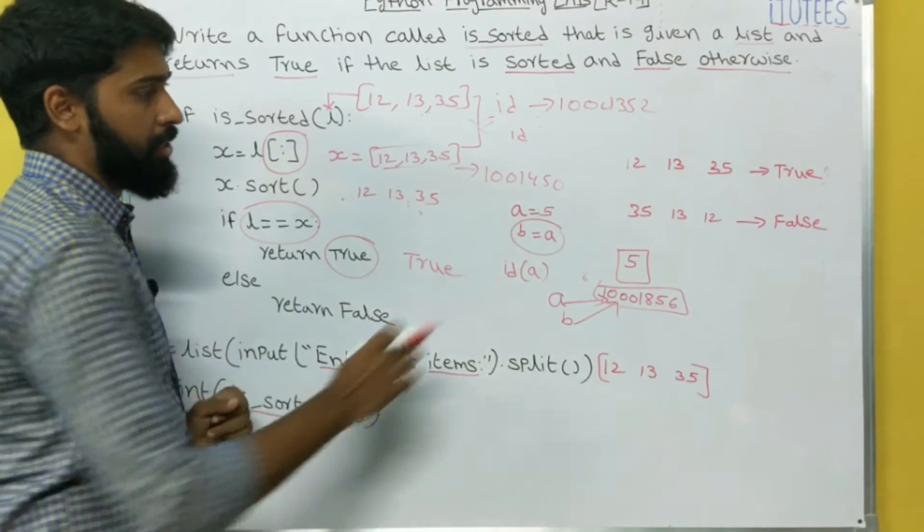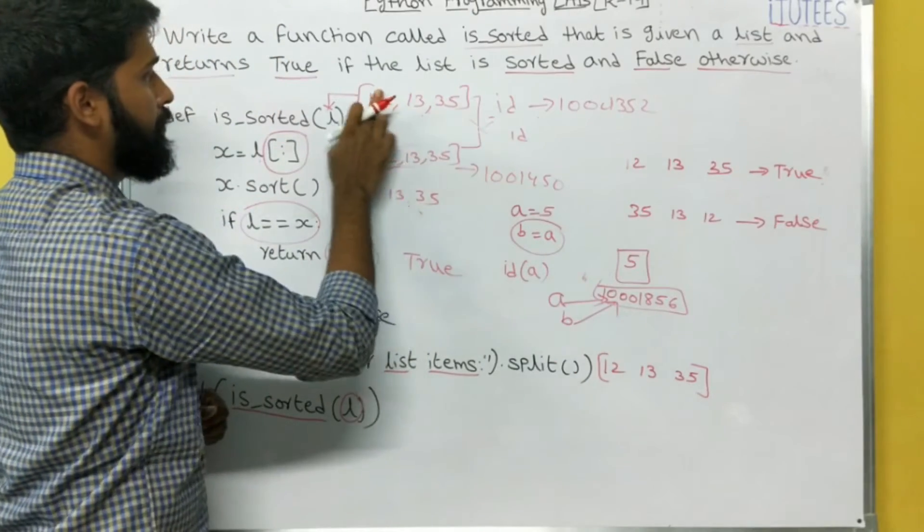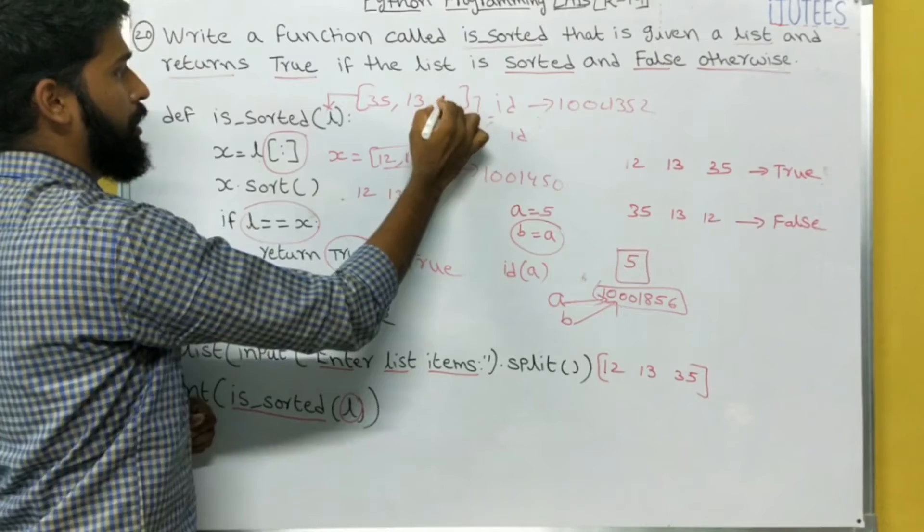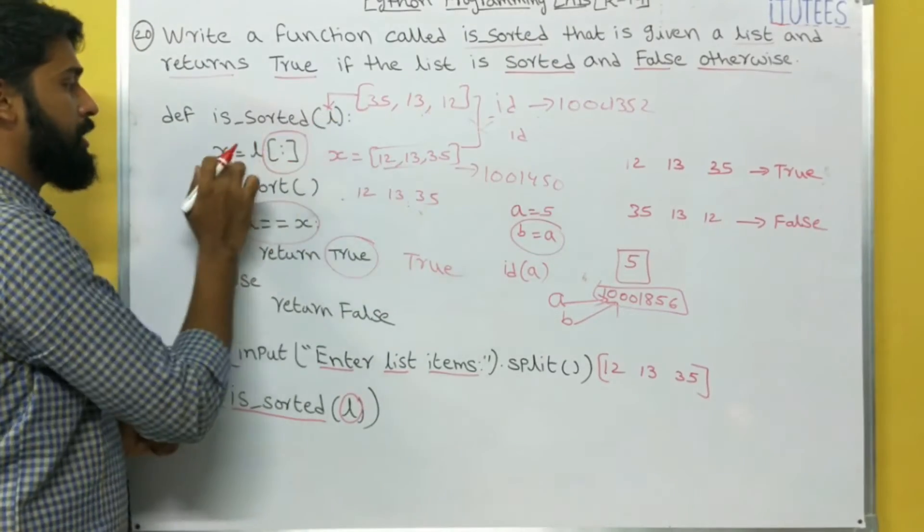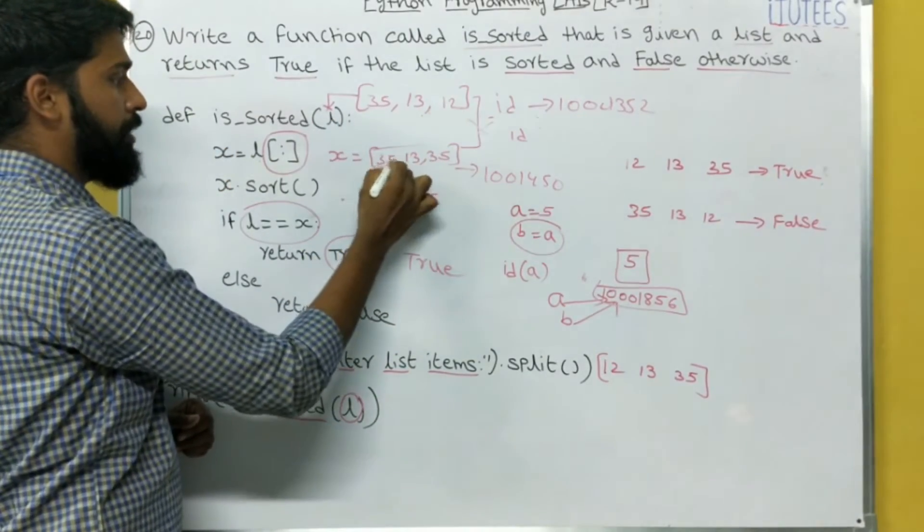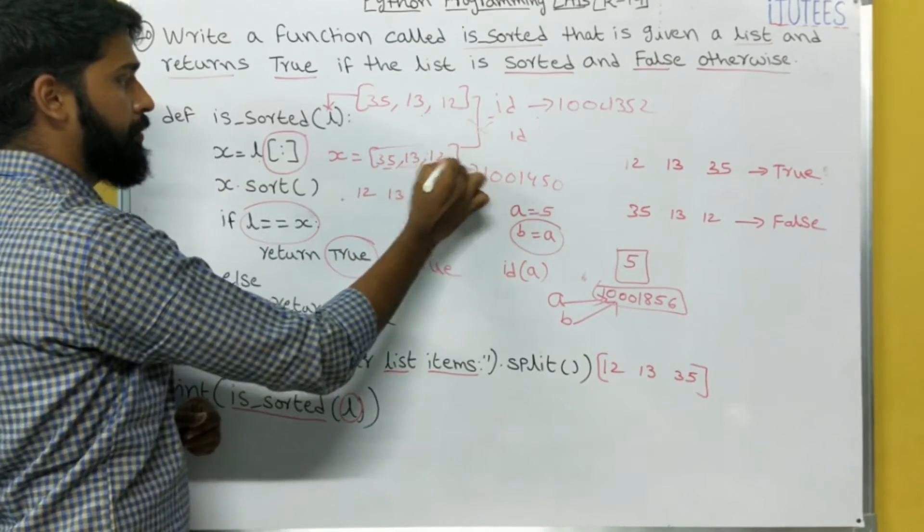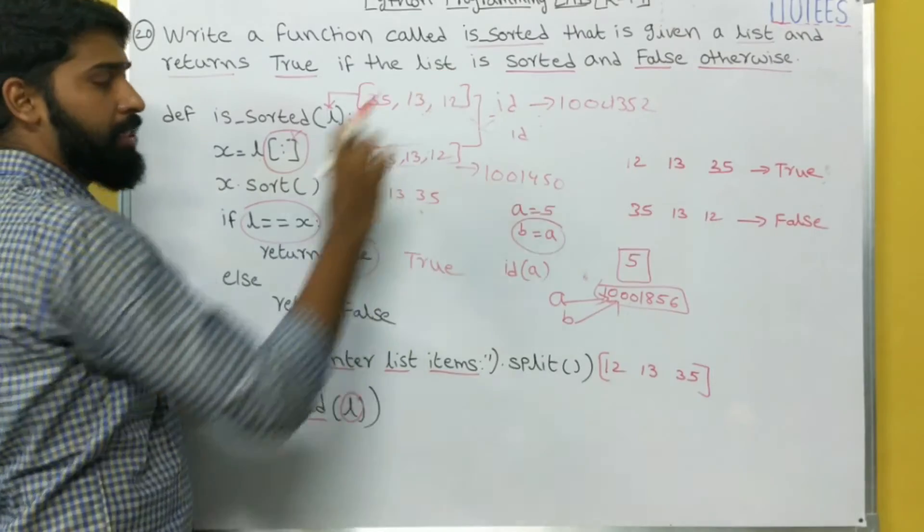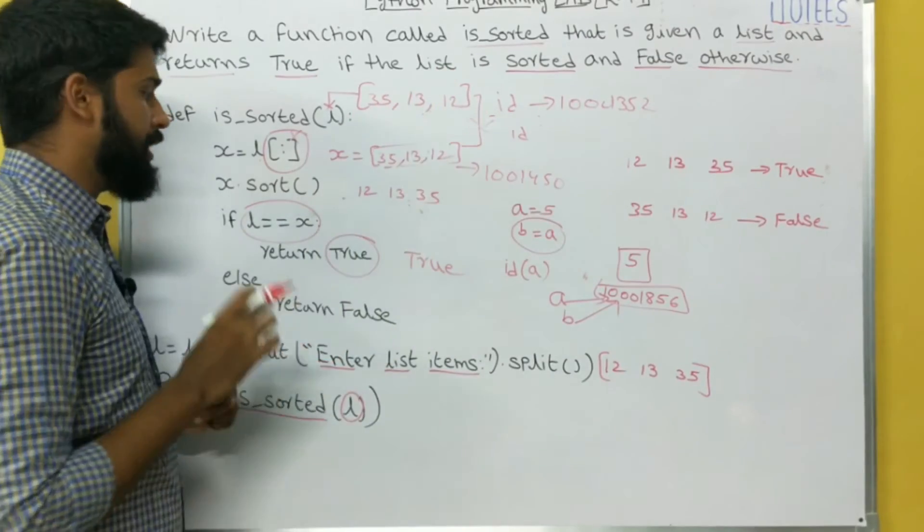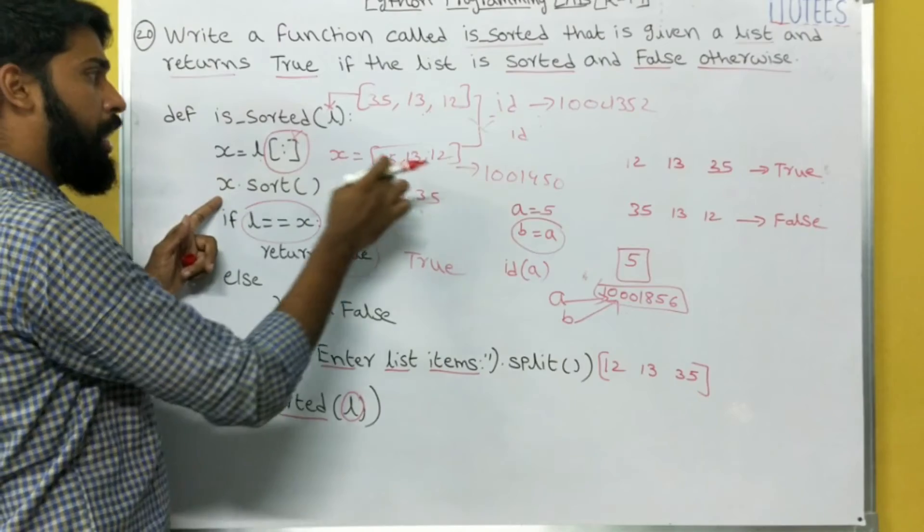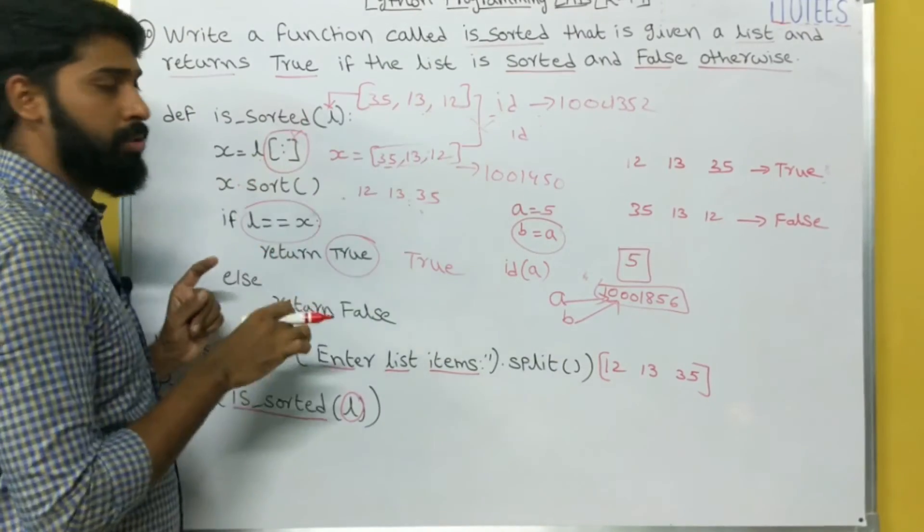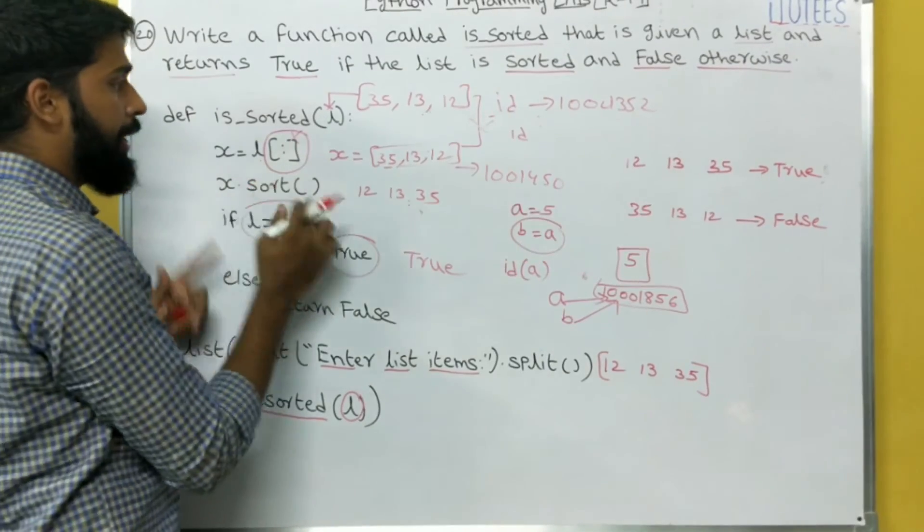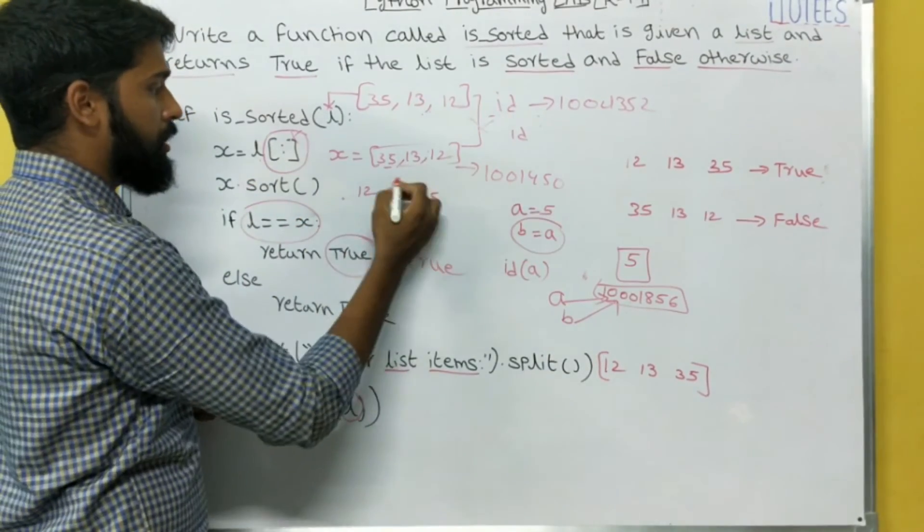You take another case 35, 13, 12. So 35, 13, 12. This is assigned to X here. 35, 13, 12. In this case, if you are not writing this, both the addresses, both the object IDs are same. X dot sort automatically references L. That's why we are using this square colon.